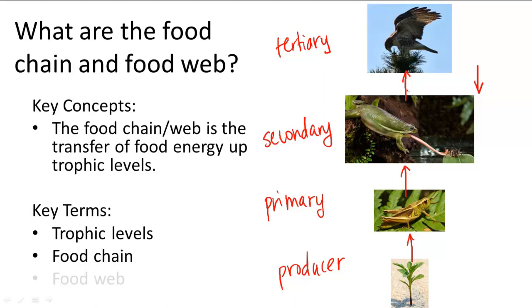As I said, in this food chain, you have the plant giving energy to the grasshopper, giving energy to the frog, giving energy to the hawk. So obviously, the food chain is very oversimplified.